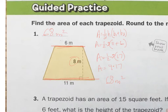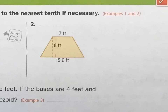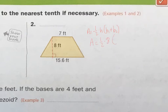Let's go to number two. Get our formula: area equals one-half times height times base one plus base two. I know my height is 8, so area equals one-half times 8. This and this are my bases: 15.6 plus 7. And 15.6 plus 7 equals 22.6.